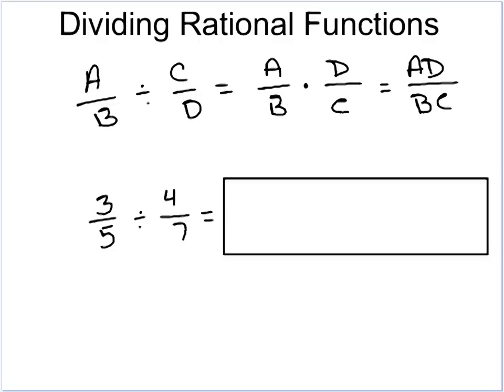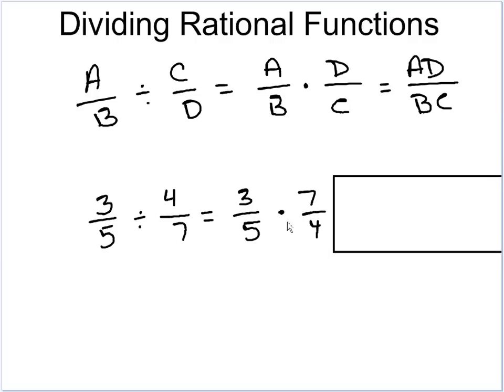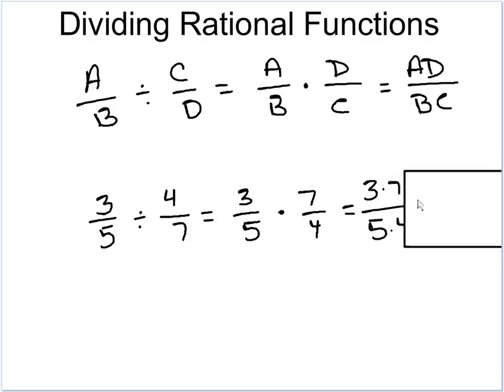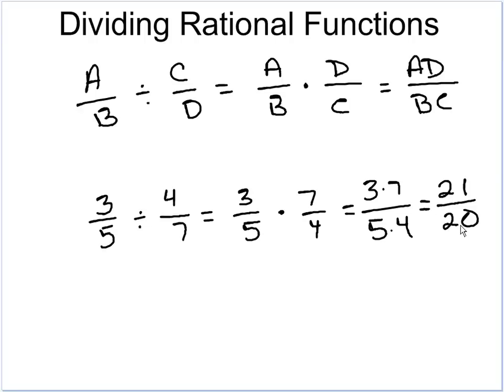Now let's look at division. Division is again the same as dividing regular fractions: a over b divided by c over d equals a over b times d over c. We flip the second fraction to get its reciprocal, giving us ad over bc. For example, 3 fifths divided by 4 sevenths: we flip the second fraction to get 3 fifths times 7 fourths, which gives us 3 times 7 over 5 times 4, which is 21 over 20.